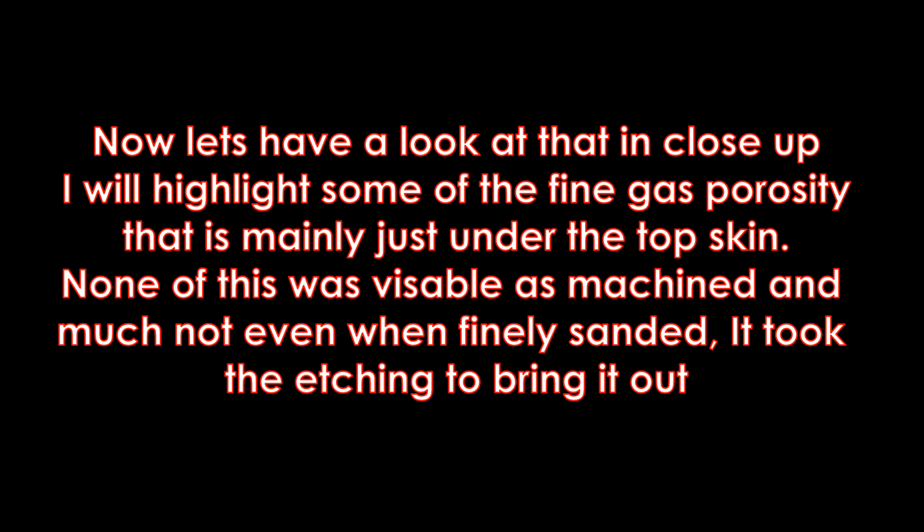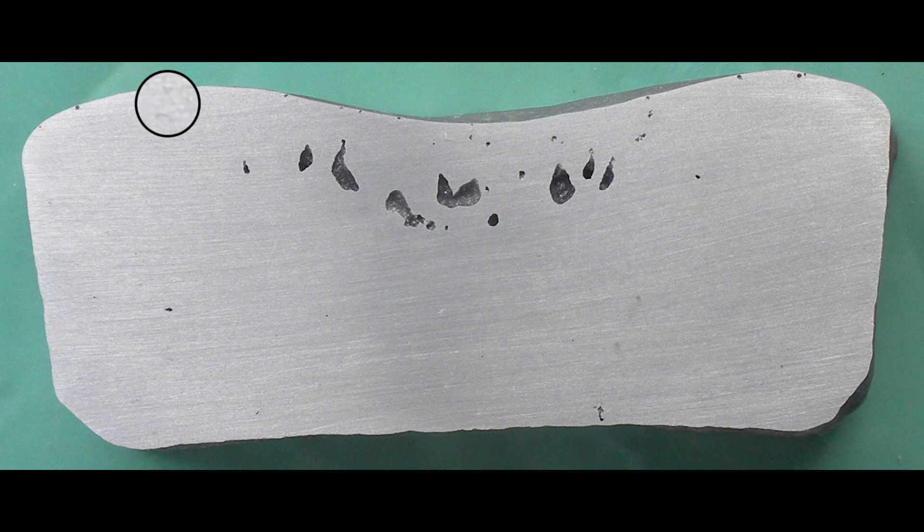Now let's have a look at that in close-up. I will highlight some of the fine gas porosity that is mainly just under the top skin. None of this was visible as machined and much not even when finally sanded. It took the etching to bring it out. Here we go moving from fine bit of porosity to fine bit of porosity. These are very small holes. They would be around the six thousandths of an inch .15 millimetre size. Typical of gas porosity in a casting like this.